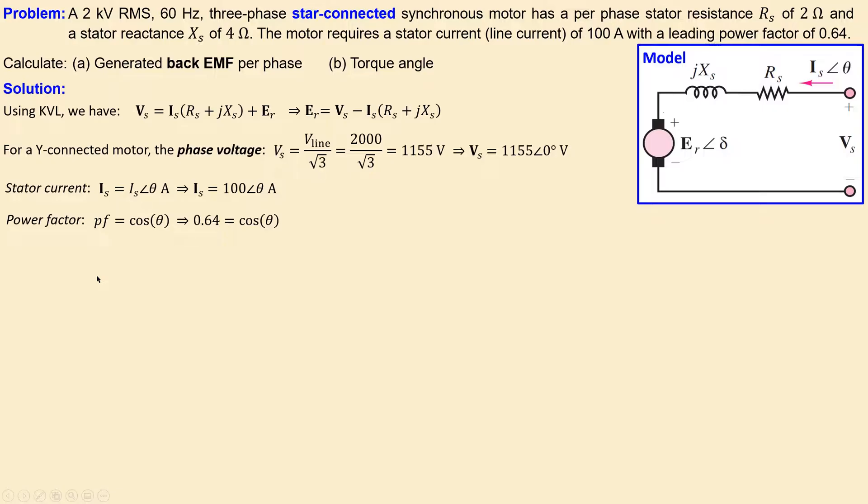We know that 0.64 is leading, so cosine of theta equals 0.64. We can rewrite this to get 50 degrees, and it's leading.